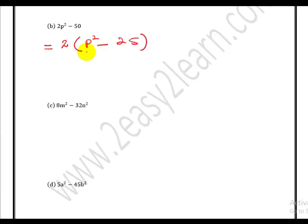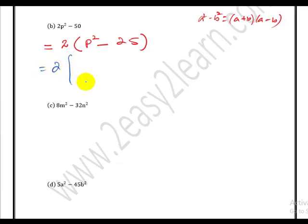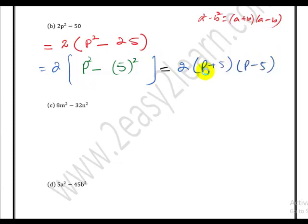Yes, p squared minus 25 can be further factorized: p is a square term and 25 is a perfect square — the square of 5 — and there is a negative sign. So we apply difference of squares: a squared minus b squared equals (a plus b)(a minus b). We write p squared minus 5 squared. The final factorization is 2(p plus 5)(p minus 5).